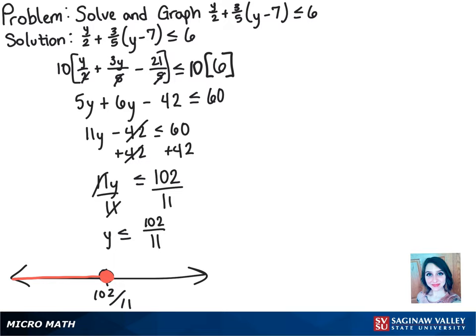For the interval notation, since it'll be going on forever with every number less than 102 over 11, it'll be negative infinity to 102 over 11, completed with the bracket since it also includes 102 over 11.